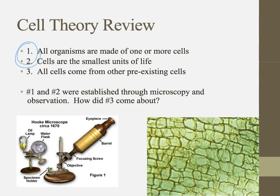The first two parts — all organisms are made of cells and cells are the smallest units of life — really came about when we advanced in the world of microscopy and used those microscopes for careful observation. The third tenet, that new cells come from pre-existing cells, came about in a different way.